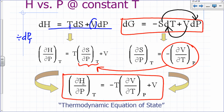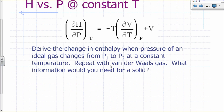So we have an expression that shows how H depends on pressure at constant temperature, expressed solely in terms of pressure, temperature, and volume — things that are easy to deal with in the lab. Given that thermodynamic equation of state, calculate the change in enthalpy when the pressure of an ideal gas changes from P1 to P2 at constant T.